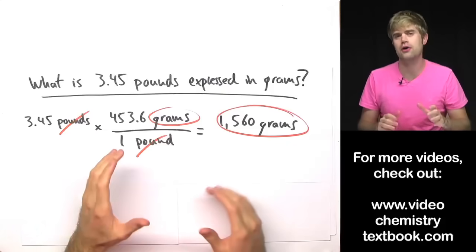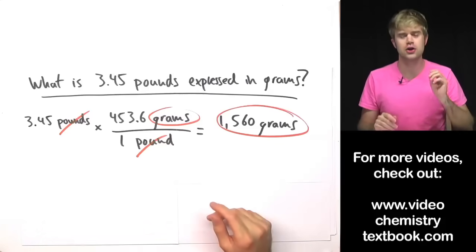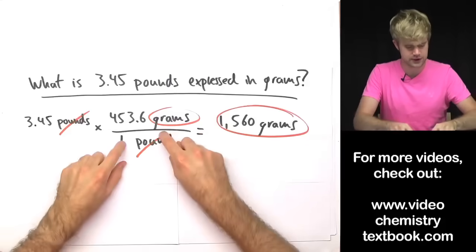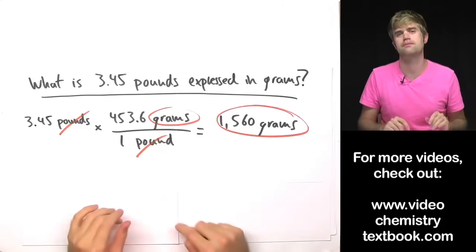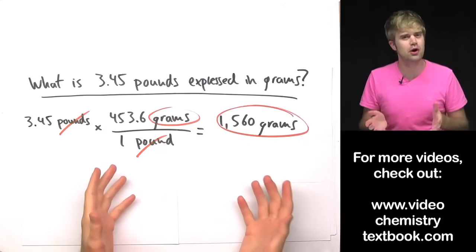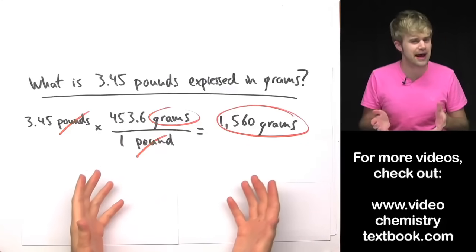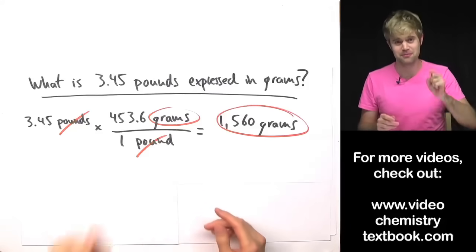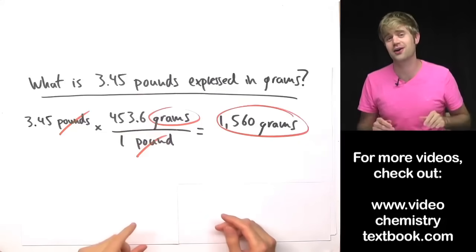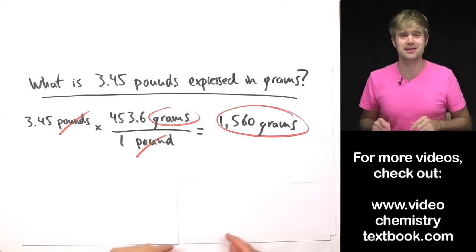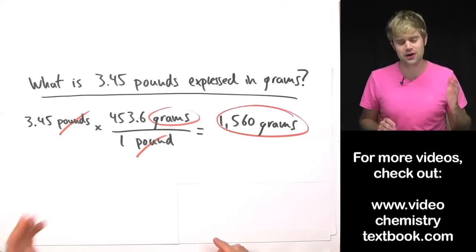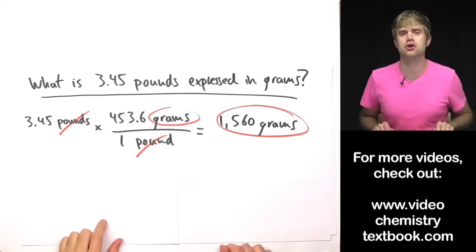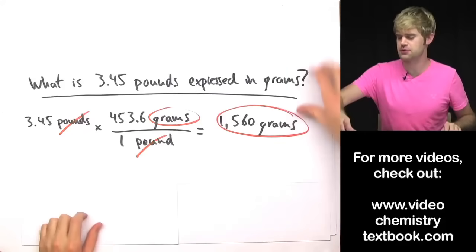In this video we're going to look at how to convert units using conversion factors and canceling units. Some people call this dimensional analysis, some people call it the factor label method, but you are going to call it easy by the end of this video because we are going to go step by step to show how to solve these kinds of problems.